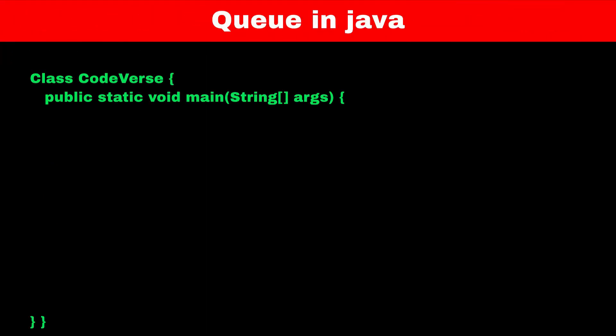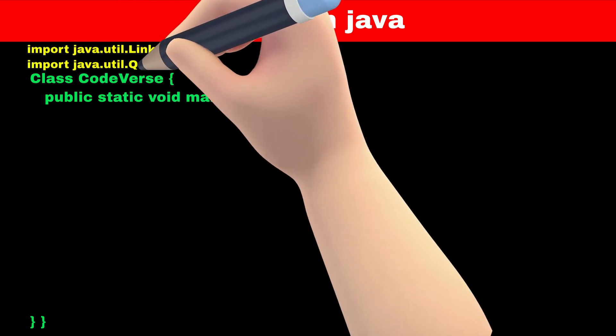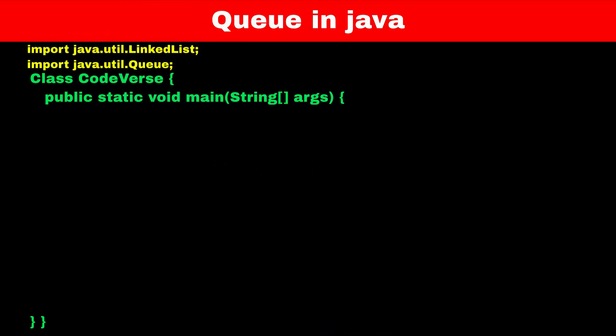Now let's see how we can use the built-in queue interface in Java. The queue interface is present in the java.util package, so we have to import it first. Since the queue is an interface, we have to implement it. There are three ways to implement a queue: first is linked list implementation, second is array deque implementation, and third is a priority queue. When defining the queue, we can select which implementation we want.